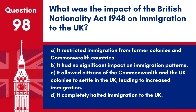Question 98. What was the impact of the British Nationality Act 1948 on immigration to the UK? a. It restricted immigration from former colonies and Commonwealth countries. b. It had no significant impact on immigration patterns. c. It allowed citizens of the Commonwealth and the UK colonies to settle in the UK, leading to increased immigration. Answer: c. The British Nationality Act 1948 was a landmark law that significantly changed British immigration by allowing Commonwealth citizens the right to live and work in the UK, thus increasing immigration.